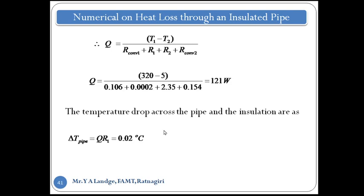For the insulation, ΔT_insulation = Q × R_conduction2 = 121 × 2.35 = 284°C. This means the temperature difference between the inner side and outer side of the insulating material is 284°C, because the insulating material strongly resists heat flow from the inner side to the outer side. Given the steam temperature is 320°C and the temperature drop across the insulation is 284°C, only a small amount of heat gets through.